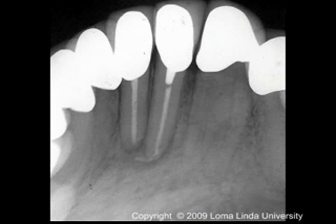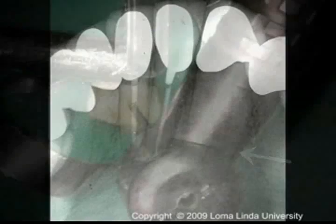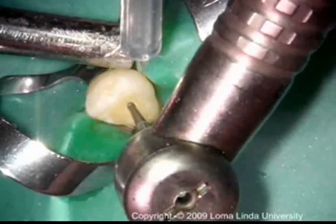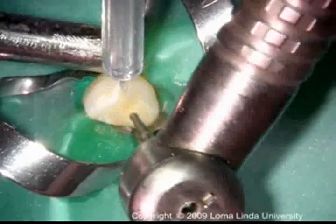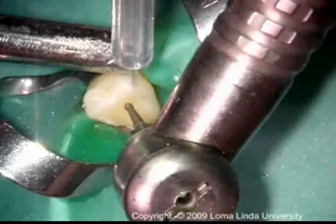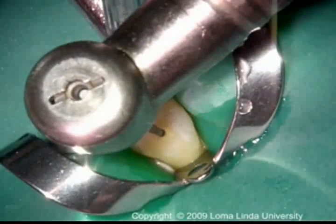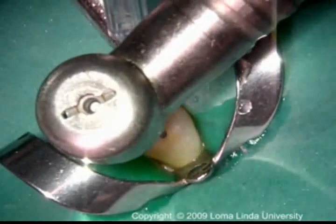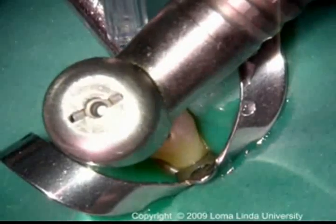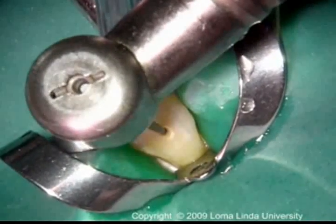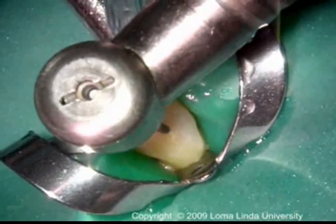This tooth can have one or two canals or roots. Like the maxillary canine, after penetration to a depth of 2 to 3 mm with a round burr, the burr is reoriented to coincide with the lingual orientation of the root and be parallel with the long axis of the tooth.